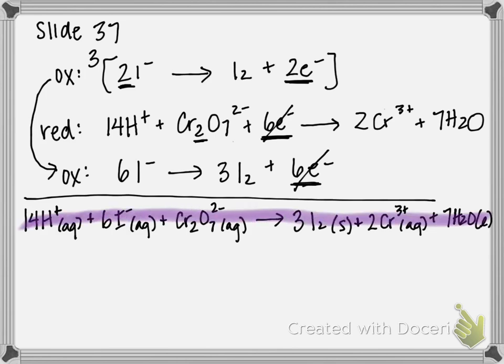And you can go through and double check to make sure the charges are balanced. On the reactant side, you should have a six plus charge. And on the product side, you should have a six plus charge. And you can go through and double check that.